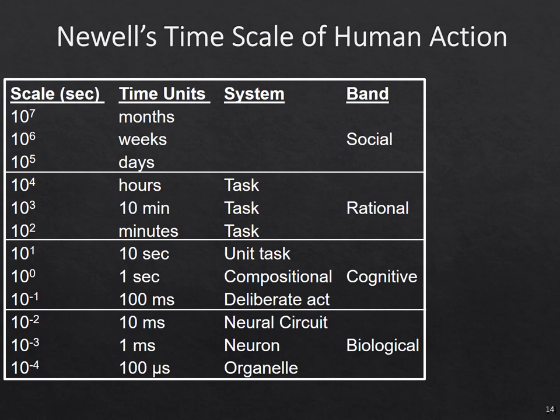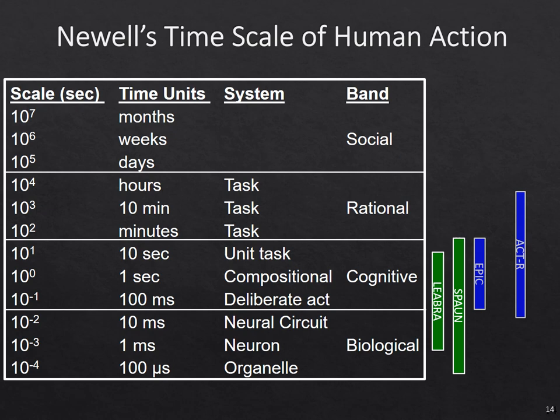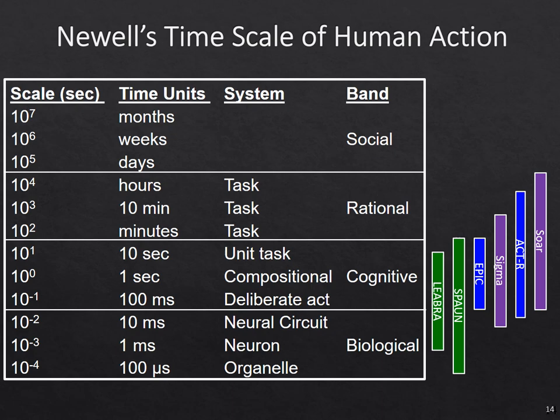We come back to Newell's timescales of human action and can try to lay out where some of these architectures fit. The systems that are more biologically oriented go all the way down to the 100-microsecond level, but also try to go up and do some kinds of tasks. The ones doing psychological modeling are doing unit tasks and sometimes going up much farther. The AI systems also span multiple timescales but do not usually go below the 100-millisecond level.